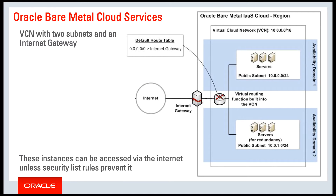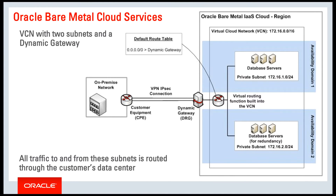Let's look at this example of a typical virtual cloud network. This virtual cloud network has two subnets — one in Availability Domain 1 and one in AD 2. It has an internet gateway, and all of the hosts in this virtual cloud network have access to the internet. Internet access to and from these instances can be controlled with security lists. You can prevent or allow egress to the internet, and you can prevent or allow some ingress from the internet.